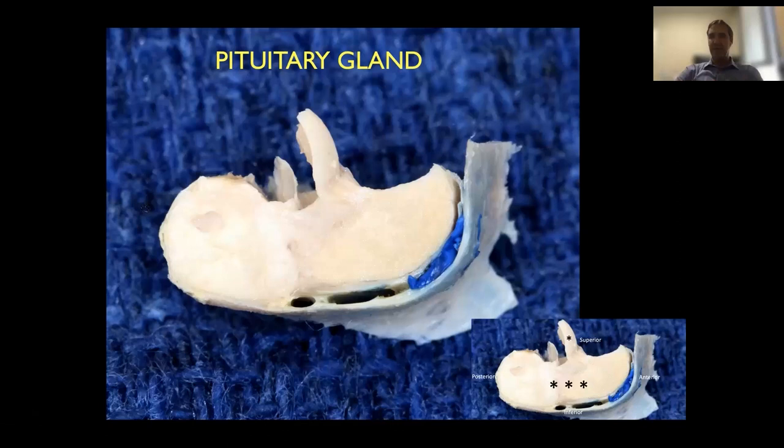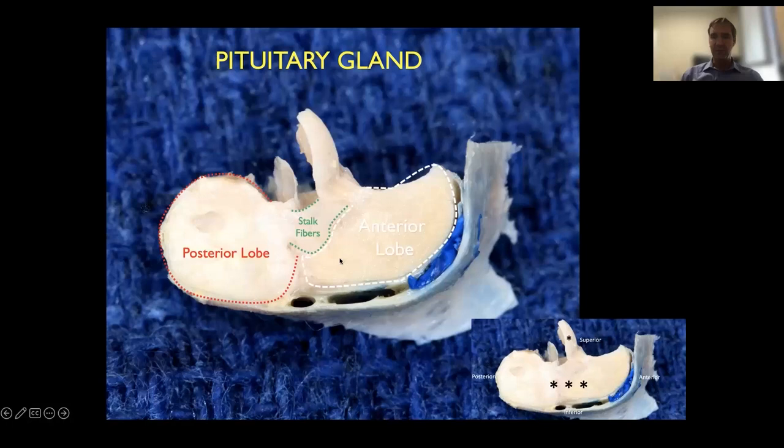I'm going to start giving you a brief overview of the anatomy of the pituitary gland. It's important that you understand the pituitary gland, its location, its shape, etc. This is a sagittal view — a side view of the pituitary gland with a midsagittal cut. It has an anterior lobe, which is larger, and produces a number of hormones.